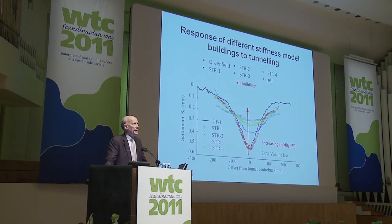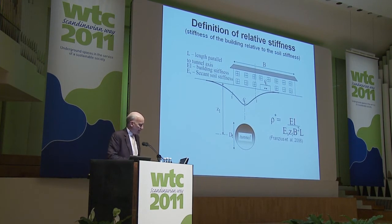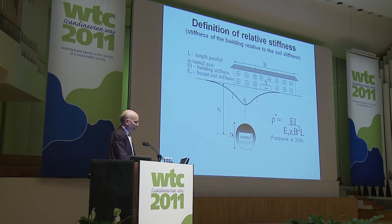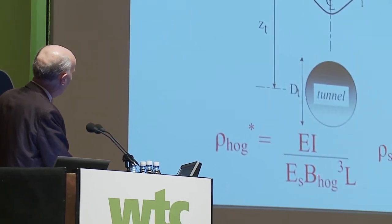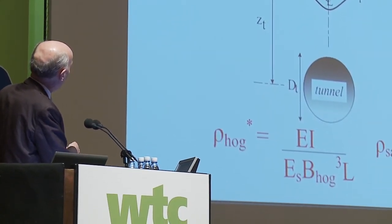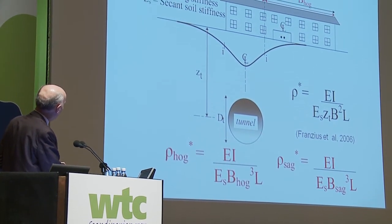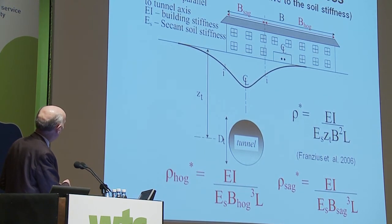This is very important for design when we have real buildings and real tunnels. Relative stiffness is defined as the stiffness of the building EI divided by the stiffness of the soil, the tunnel depth, and some building dimensions — as proposed in the past by Franzius and other workers. But there are new, simpler definitions: EI of the building divided by the soil stiffness, divided by the width of the building in the hogging zone (B_hog cubed) times L, which is the length parallel to the tunnel, and equivalently for the sagging zone. These new definitions are much more appropriate for design.